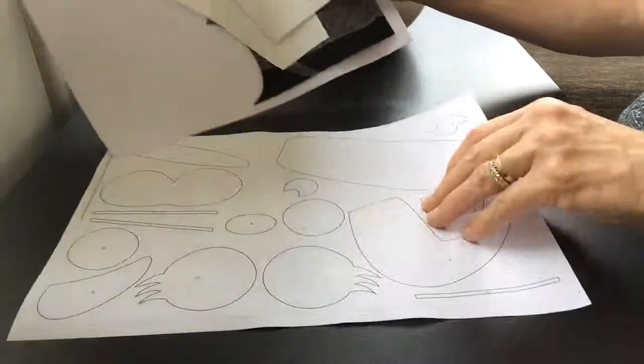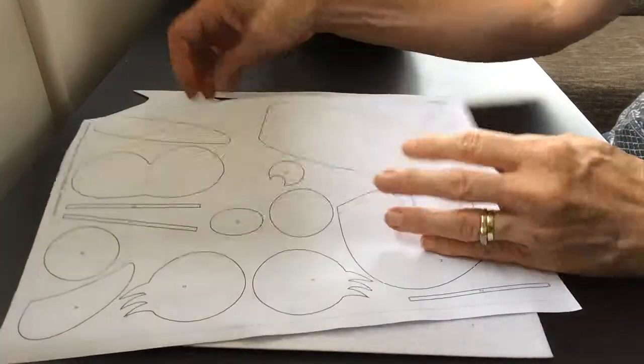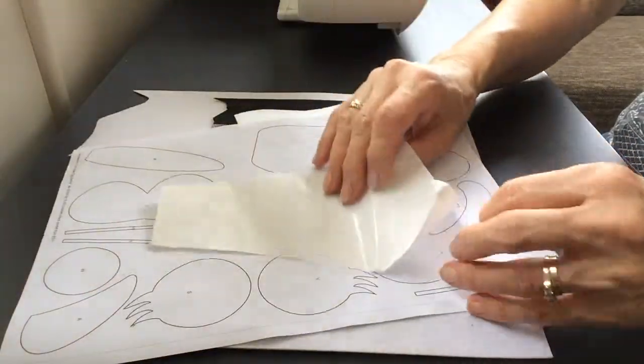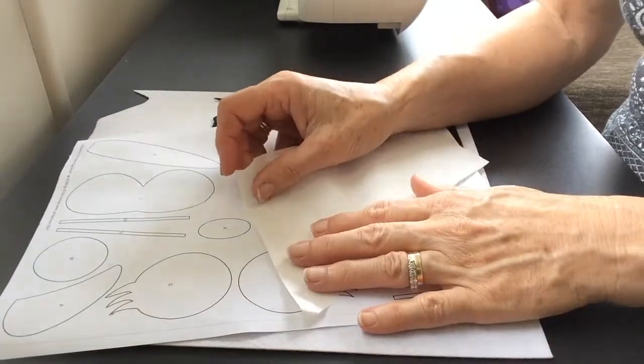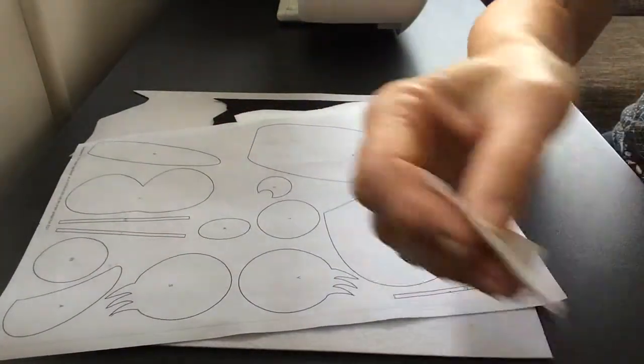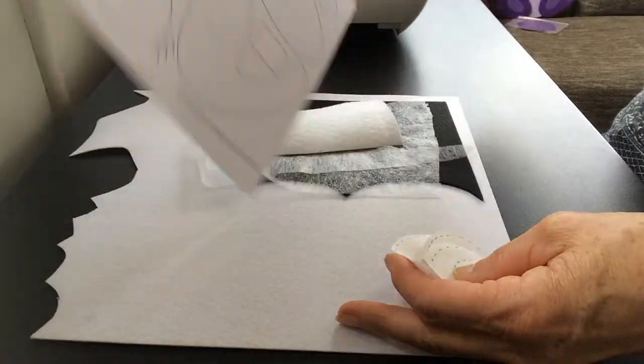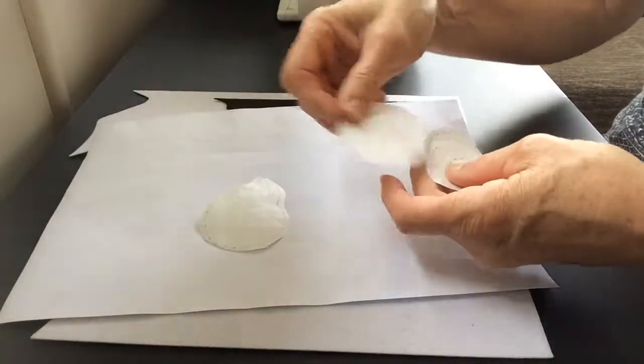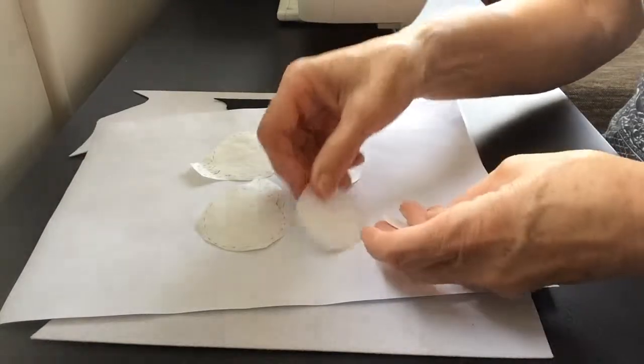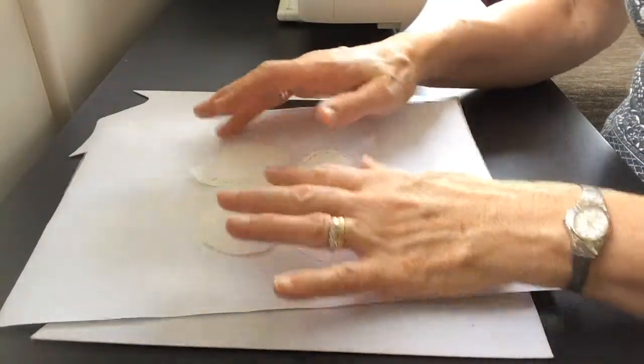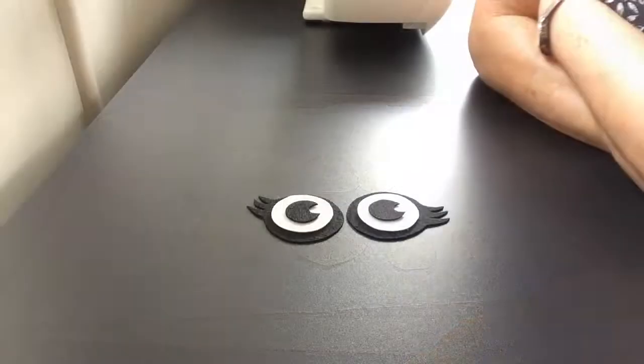I've already done that, so here they are. I've got my two sets of eyes all traced. We'll turn this over so you can see them a bit better. What I'm going to do now is iron these on. My eyes are all cut out.